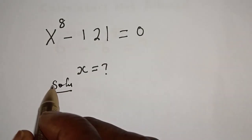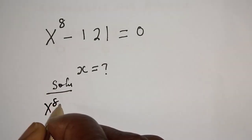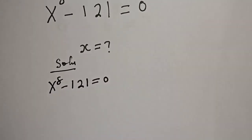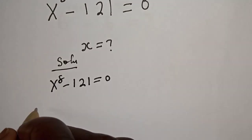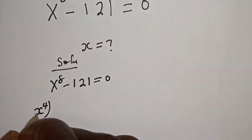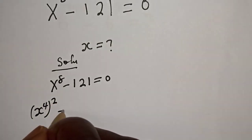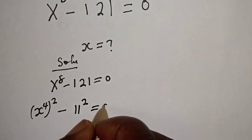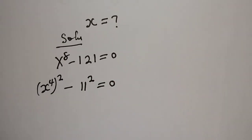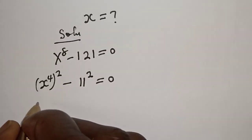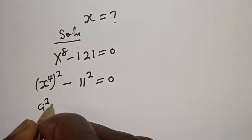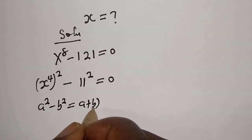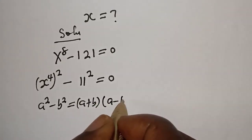S raised to power 8 minus 121 is equal to 0. Now, s raised to power 8 can be written as s raised to power 4, squared, minus 121 which is 11 squared, is equal to 0. This is the difference of two squares: a squared minus b squared is equal to a plus b multiplied by a minus b.